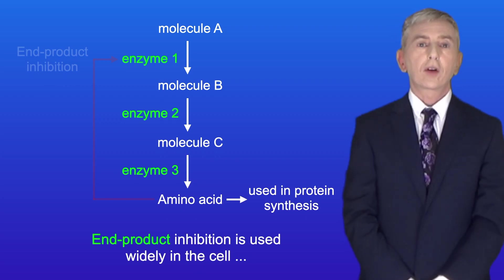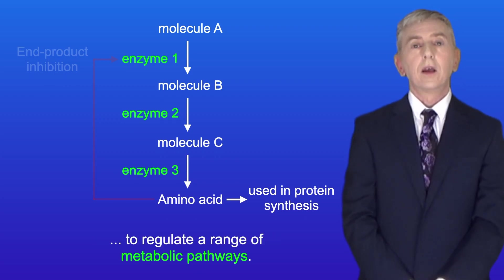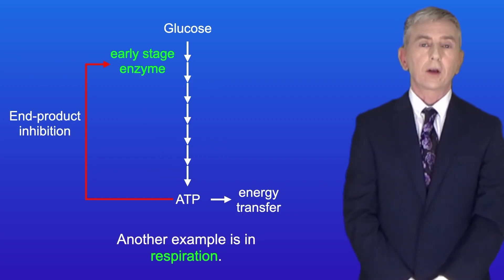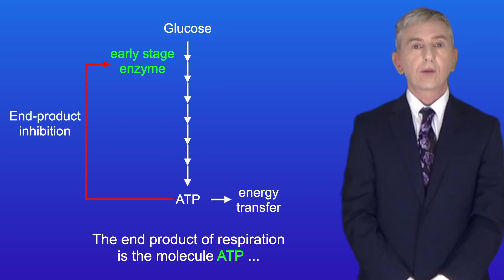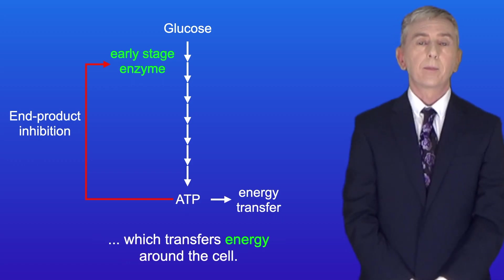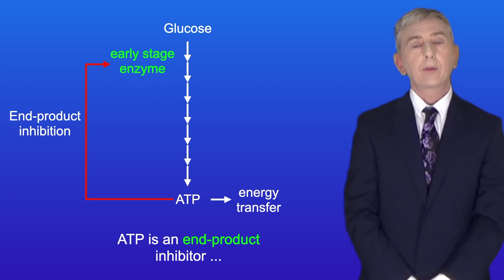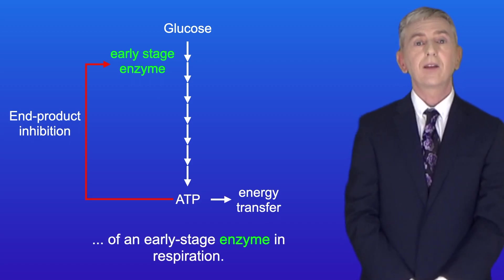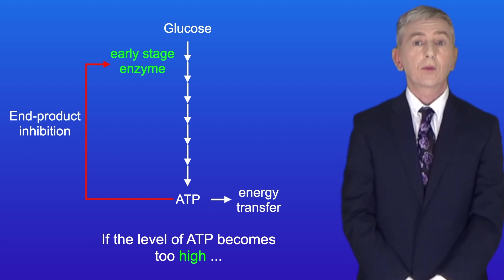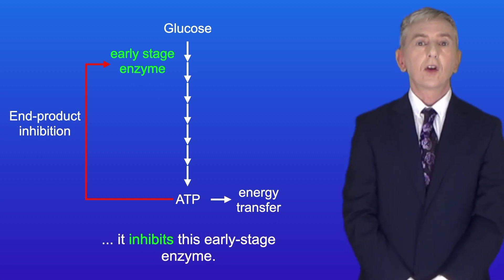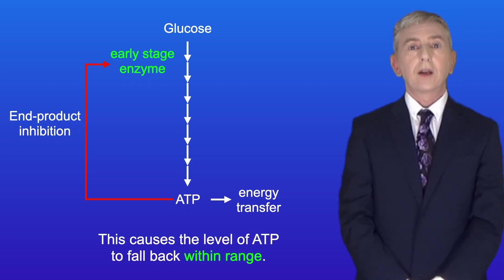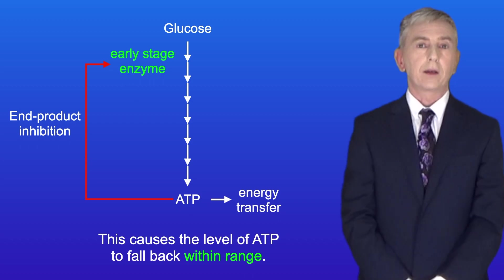Now end product inhibition is used widely in the cell to regulate a range of metabolic pathways. Another example is in respiration. The end product of respiration is the molecule ATP, which transfers energy around the cell. ATP is an end product inhibitor of an early stage enzyme in respiration. So if the level of ATP becomes too high, it inhibits this early stage enzyme and causes the rate of respiration to decrease, and this causes the level of ATP to fall back within range.